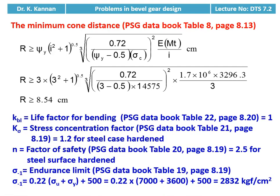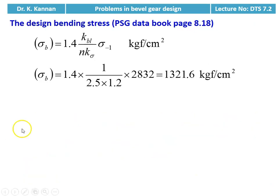We take the parameters for calculating design bending stress: KBL (life factor for bending) = 1; Kσ (stress concentration factor for steel) = 1.2; factor of safety = 2.5 for steel surface hardened from table 20. Endurance limit σ₋₁ = 0.22(σU + σY) + 500 = 0.22(7000 + 3600) + 500 = 2832 kgf/cm². Design bending stress σB = 1.4 × KBL / (N × Kσ) × σ₋₁ = 1.4 × 1 / (2.5 × 1.2) × 2832 = 1321.6 kgf/cm².